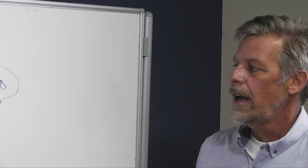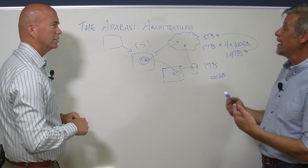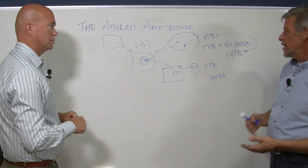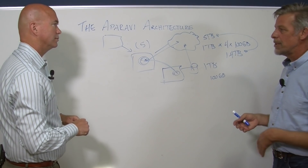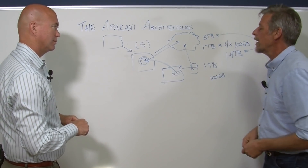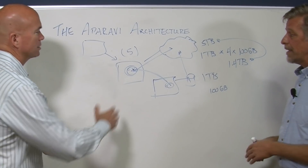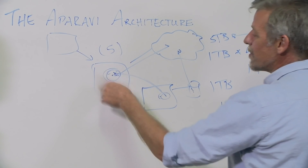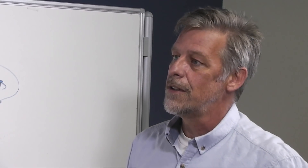Backups can run as frequently as every minute, capturing changes almost in real time. Aparavi has three tiers: checkpoints are stored on the local system for quick recovery of deleted files, with a default policy of every hour. Snapshots are a roll-up sent to the appliance, typically once a day, protecting against media or file server failure. Archives sync data from the appliance up to the cloud — typically once a night — and represent long-term storage.